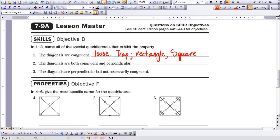Let's look at number two. The diagonals are both congruent and perpendicular. So it has to have both of those. So we know that it can only be the isosceles trapezoid, the rectangle, and the square.